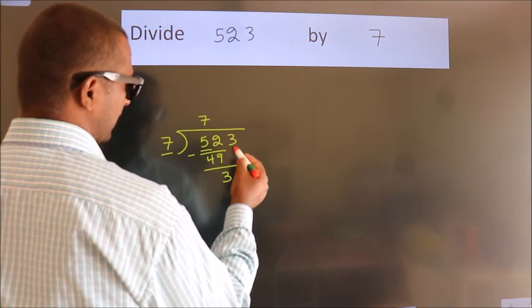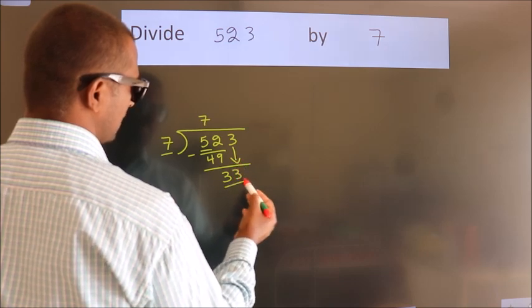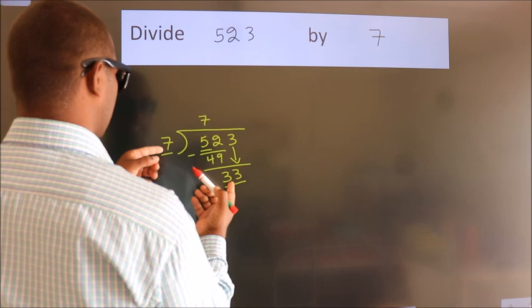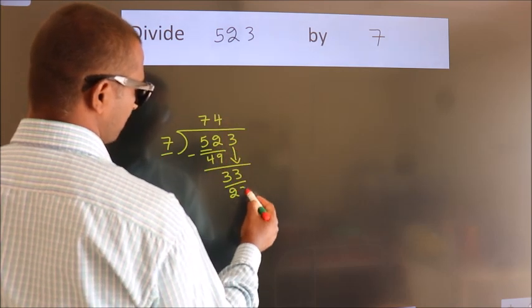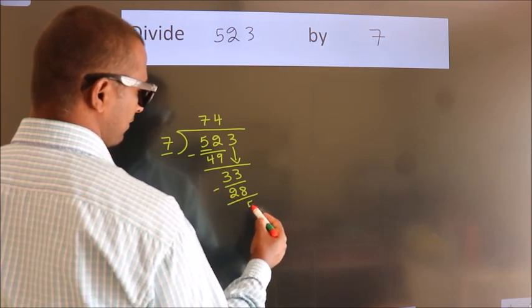After this, bring down the next number. So, 3 down, making 33. A number close to 33 in the 7 table is 7 times 4 equals 28. Now, we subtract. We get 5.